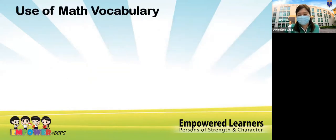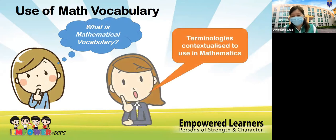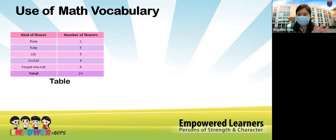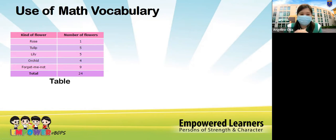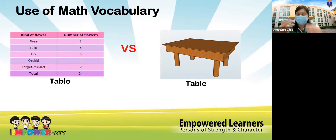Mathematical vocabulary consists of terminologies highly contextualized to mathematics. For example, when we say 'table' in math, we mean a data representation — showing types of flowers and how many of each. But a child without that context will think of the table they eat on. Children must be explicitly taught such vocabulary.